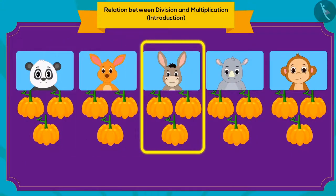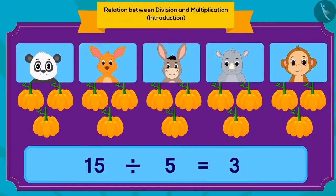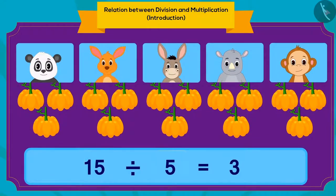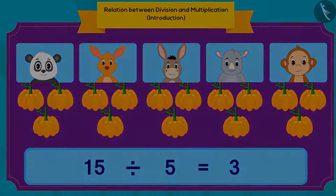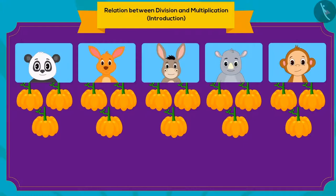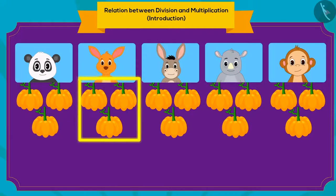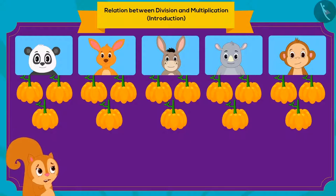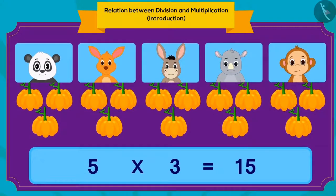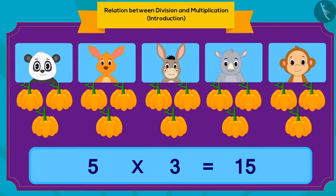How can we write this using division? When you divide 15 pumpkins equally into five parts, you get three pumpkins in each part. We have five friends and each friend gets three pumpkins. We can also write this using multiplication: five multiplied by three is 15 pumpkins.